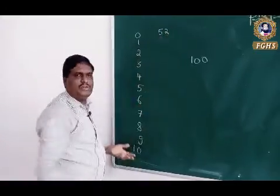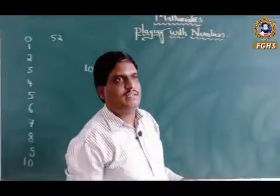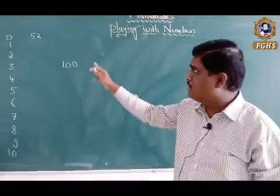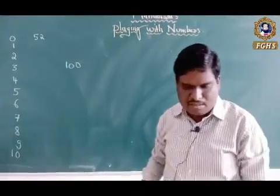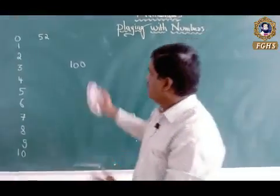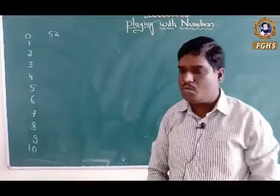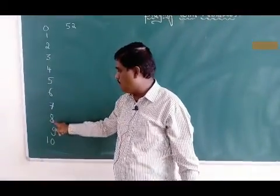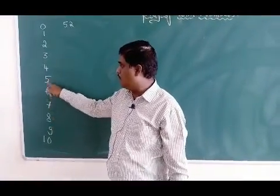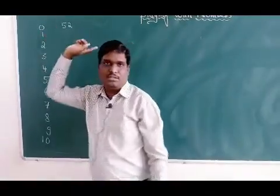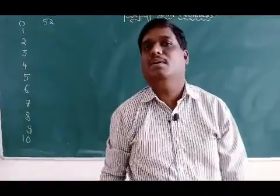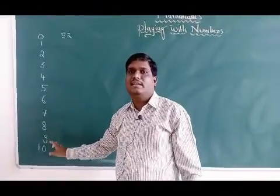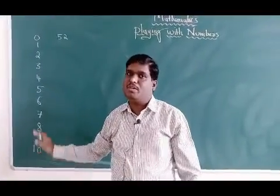When you write numbers this way, we use only those 10 digits: 1, 2, 3, 4, 5, 6, 7, 8, 9, and 0. Whatever big the number is, however large the number is, we are going to use only these 10 digits to represent it.